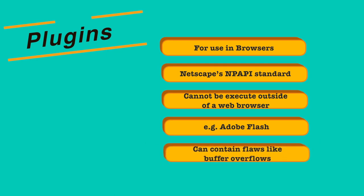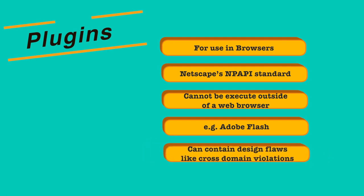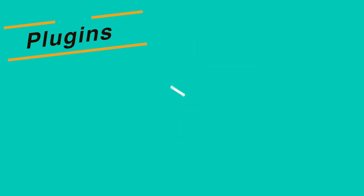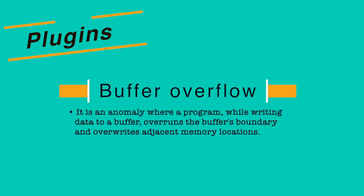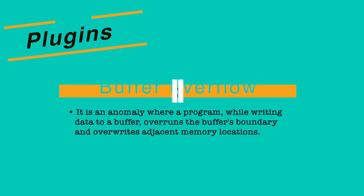Plugins can contain programming flaws such as buffer overflows, or design flaws such as cross-domain violations which arise when the same origin policy is not followed. A buffer overflow is an anomaly where a program, while writing data to a buffer, overruns the buffer's boundary and overwrites adjacent memory. This is a violation of memory safety — when execution crosses that boundary, it can execute unintended instructions, allowing an attacker to set instructions beyond the buffer boundary and execute them.